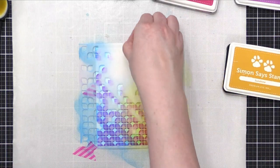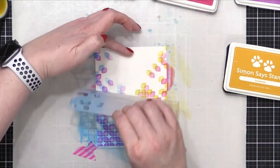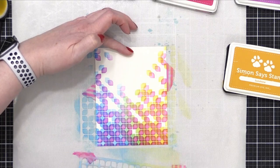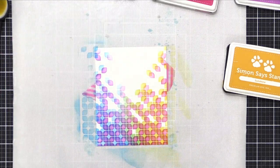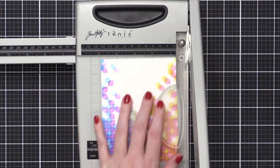So now I'm going to remove the stencil, and you can see that it has created this really cool ink-blended offset, almost rainbow pattern. It looks a little bit digital. It looks really neat.